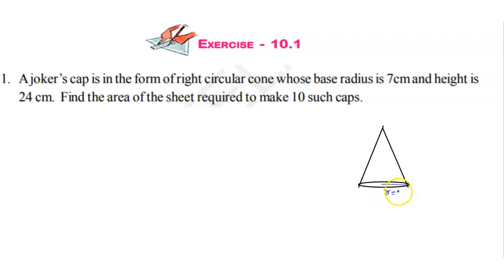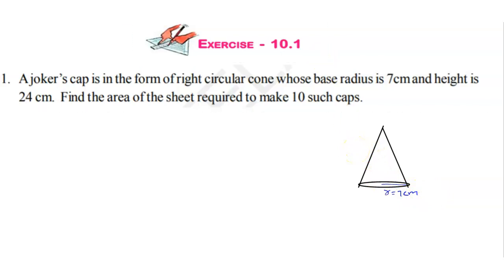The radius is equal to 7 cm. Now we note that the height is not directly the slant height — this is the slant height we need to find separately.